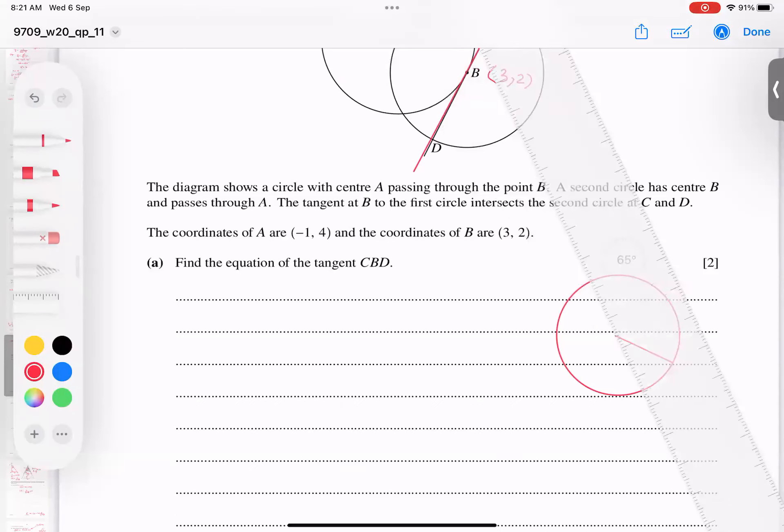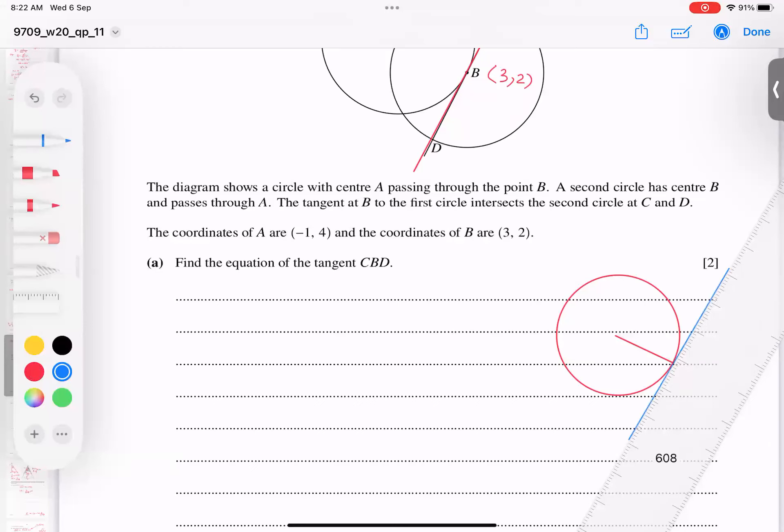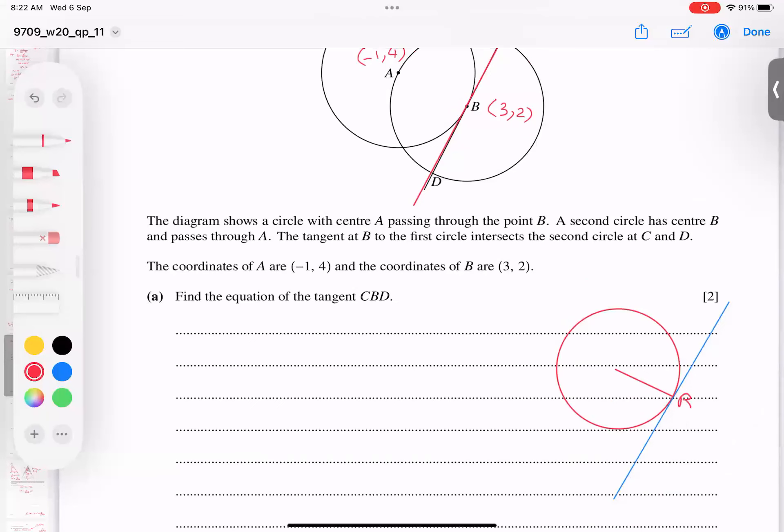And join this blue line, you can see. This is a blue line. This is called tangent. And this point is B, coordinate 3, 2. And this A will behave as a center, negative 1, 4. So, and this is 90 degrees for sure.